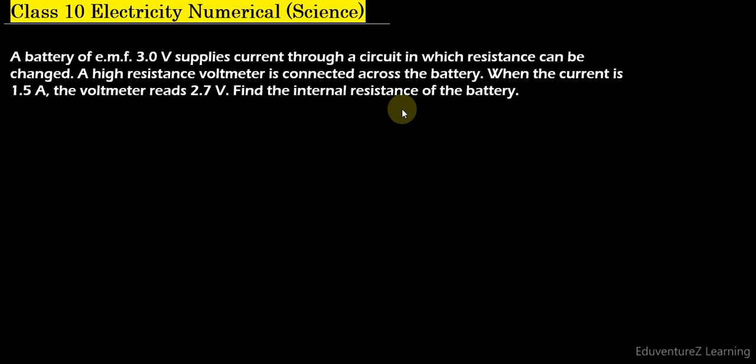Hello student, here is a question which says a battery of emf 3 volt supplies current through a circuit in which resistance can be changed. A high resistance voltmeter is connected across the battery. When the current is 1.5 ampere, the voltmeter reads 2.7 volt.